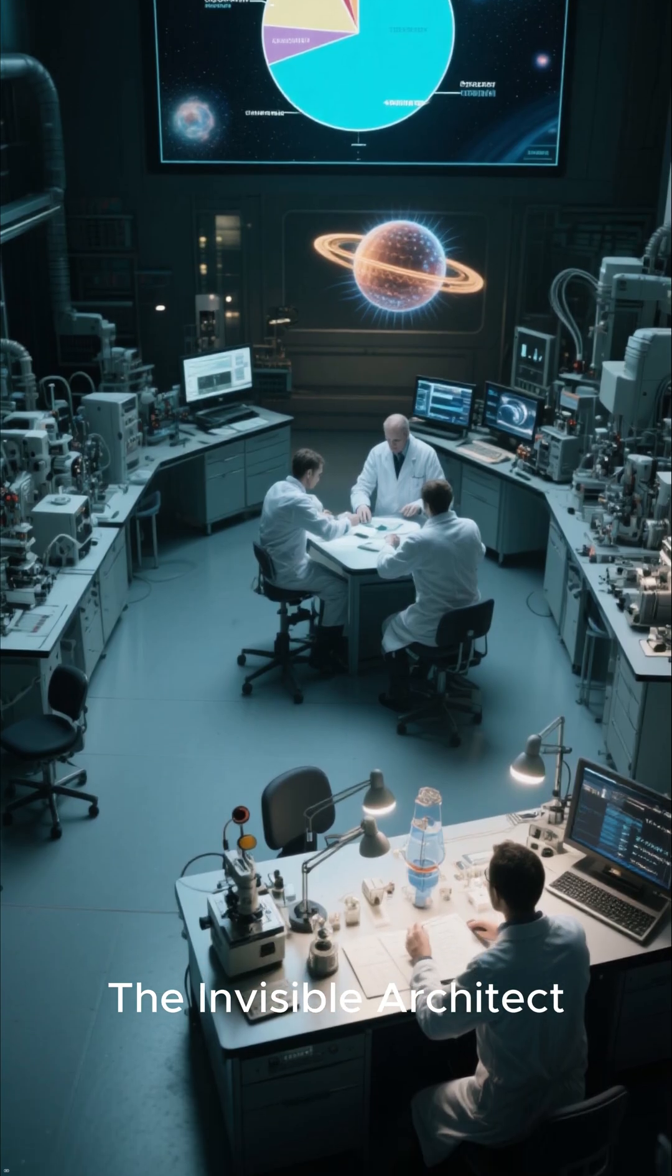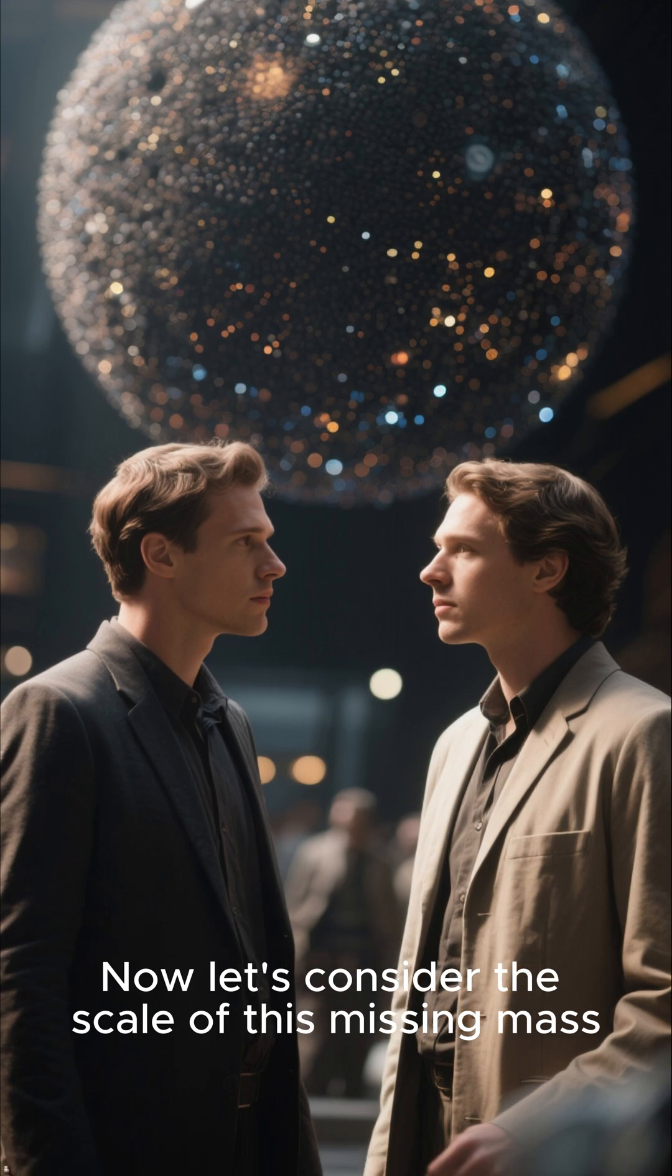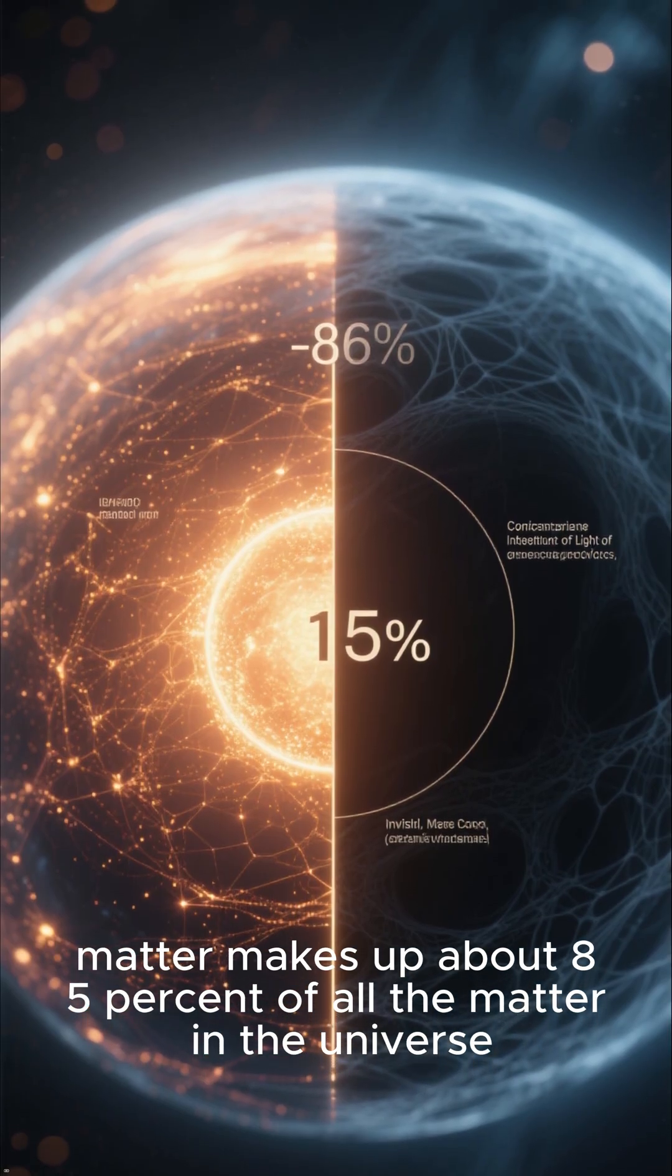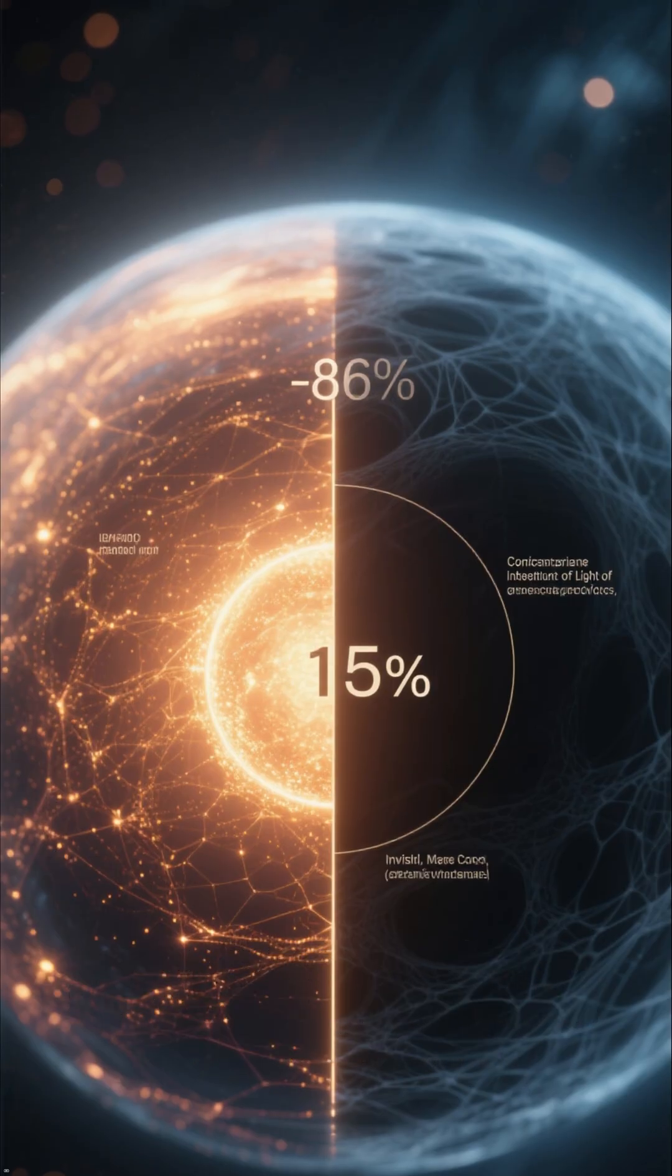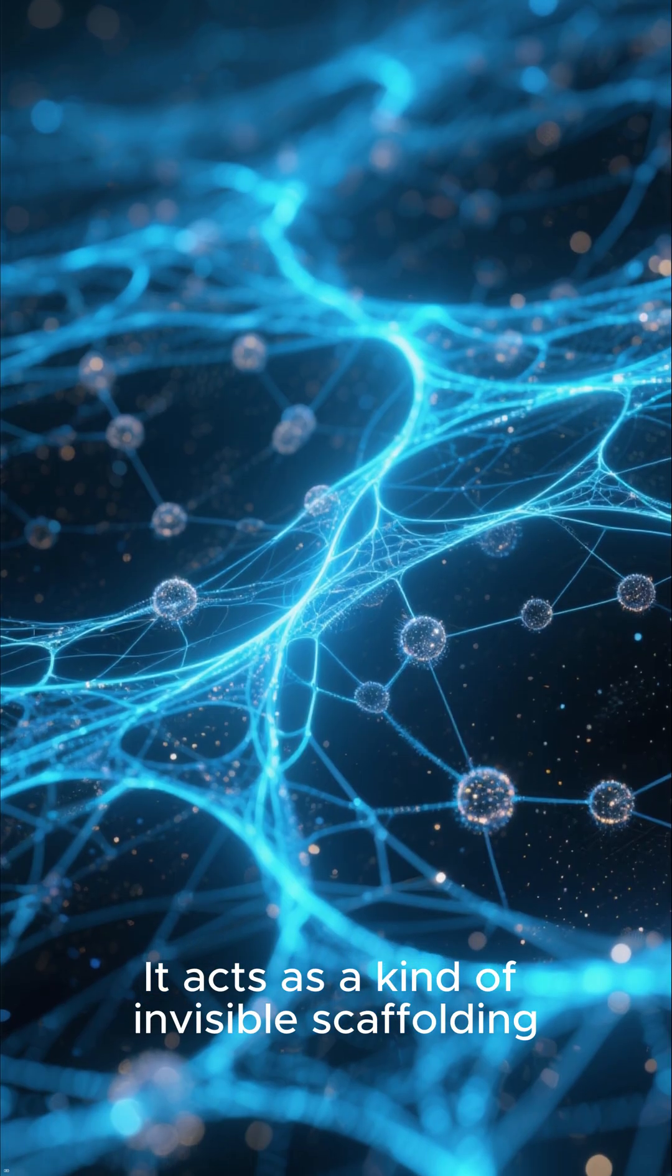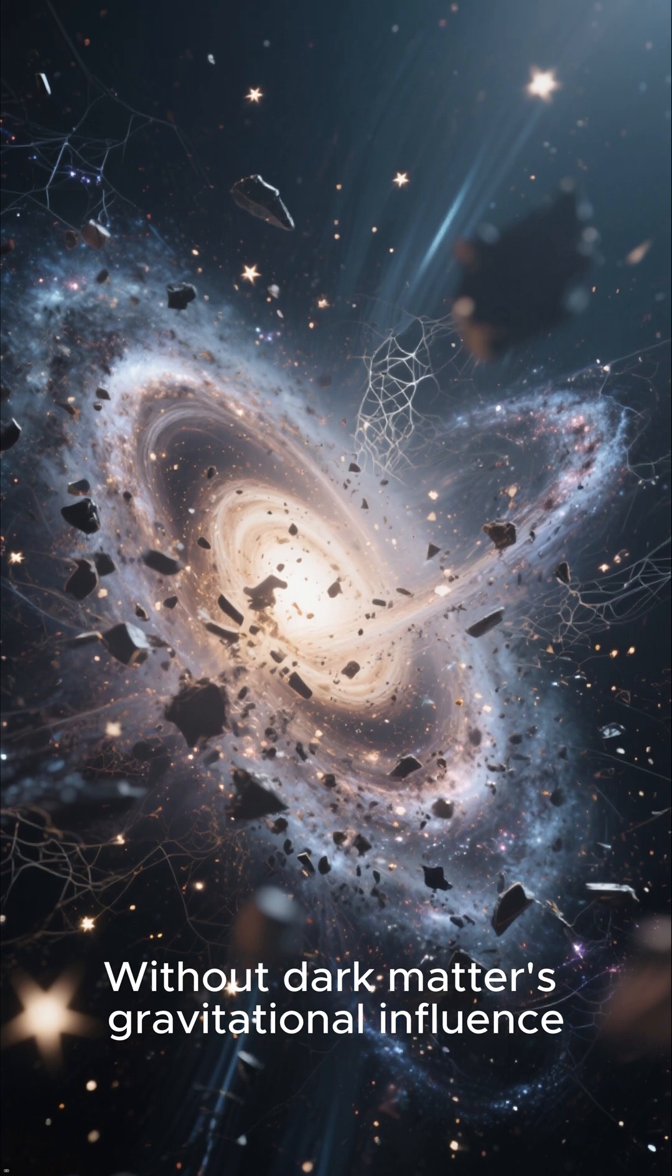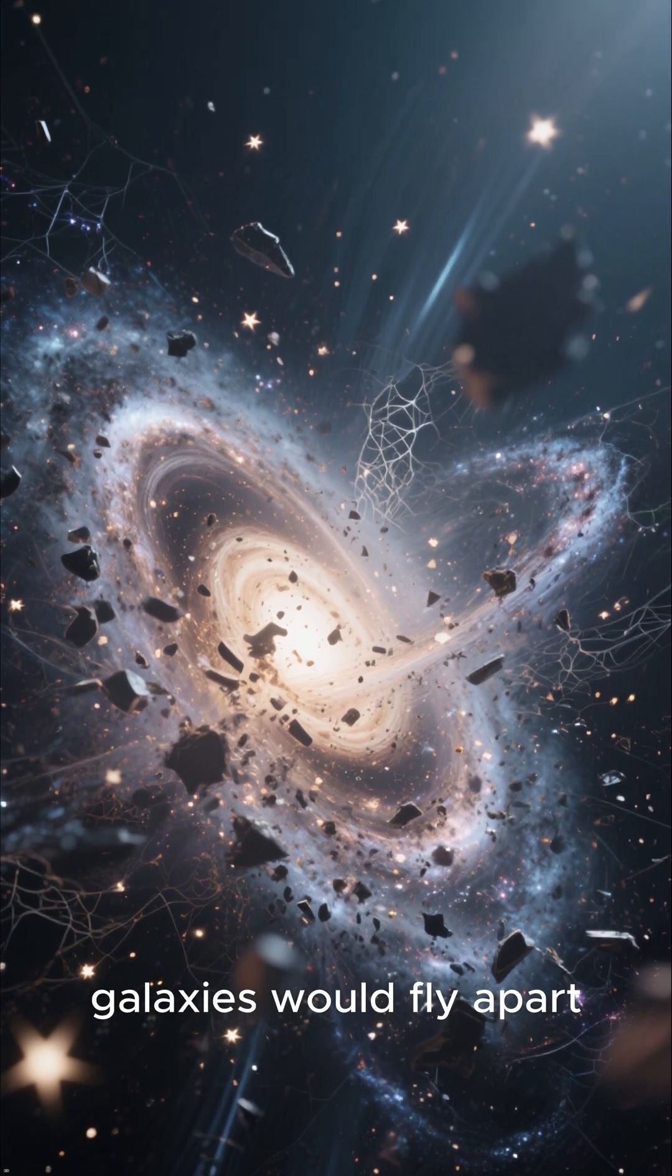The invisible architect. Now let's consider the scale of this missing mass. Scientists now believe that dark matter makes up about 85% of all the matter in the universe. It acts as a kind of invisible scaffolding, forming vast cosmic webs that galaxies cluster around. Without dark matter's gravitational influence, galaxies would fly apart.